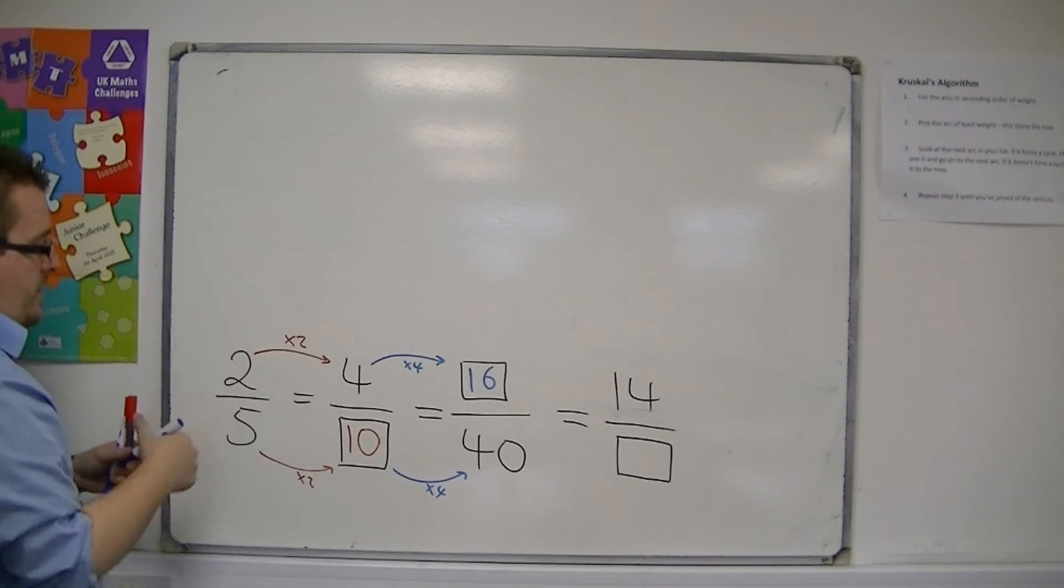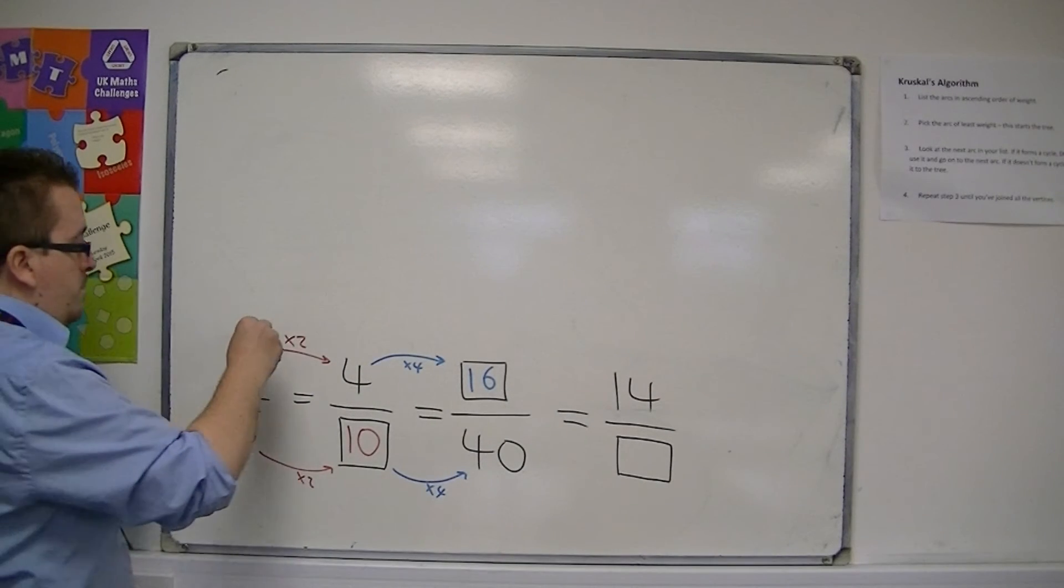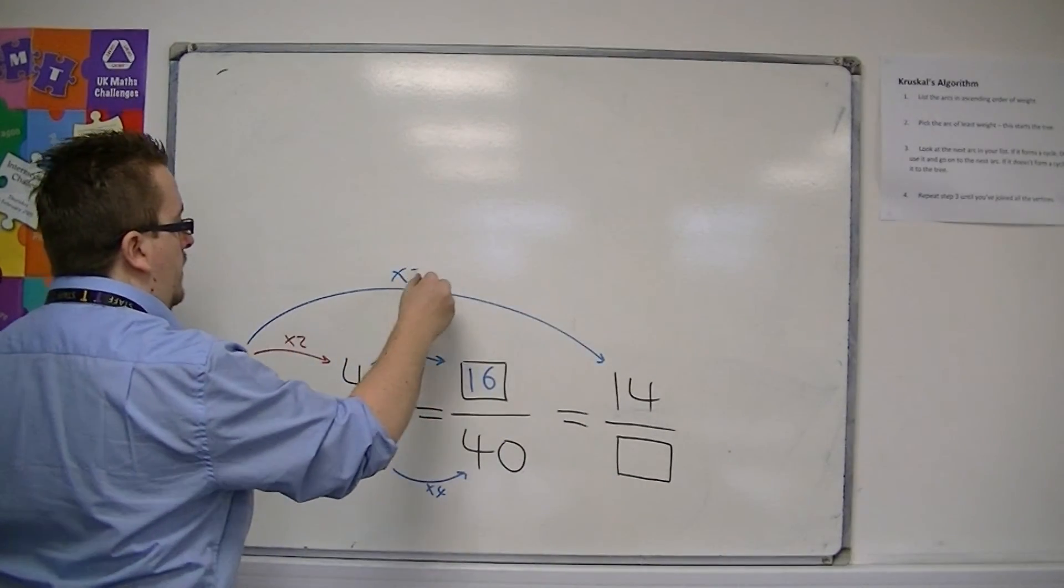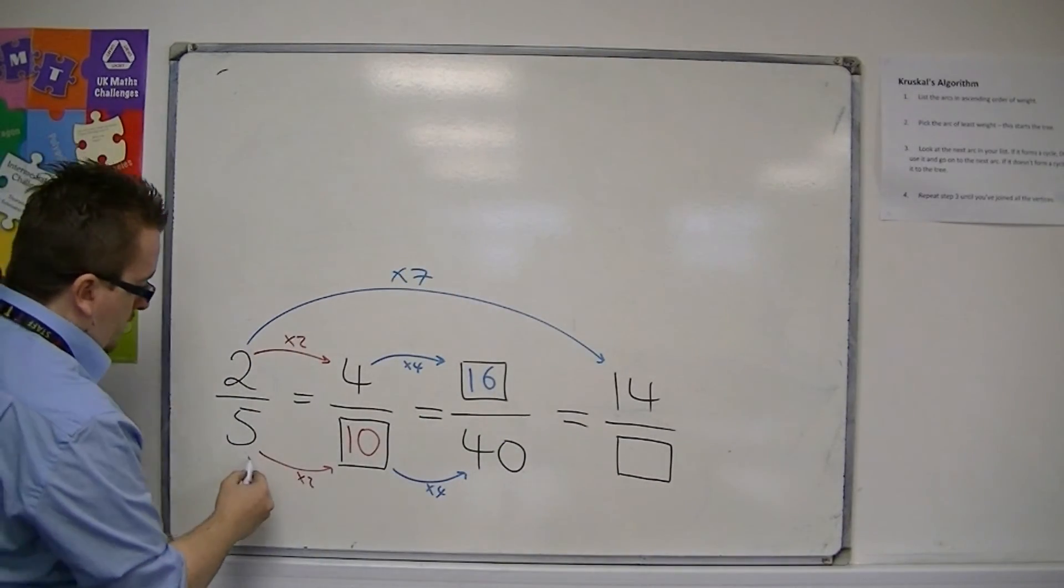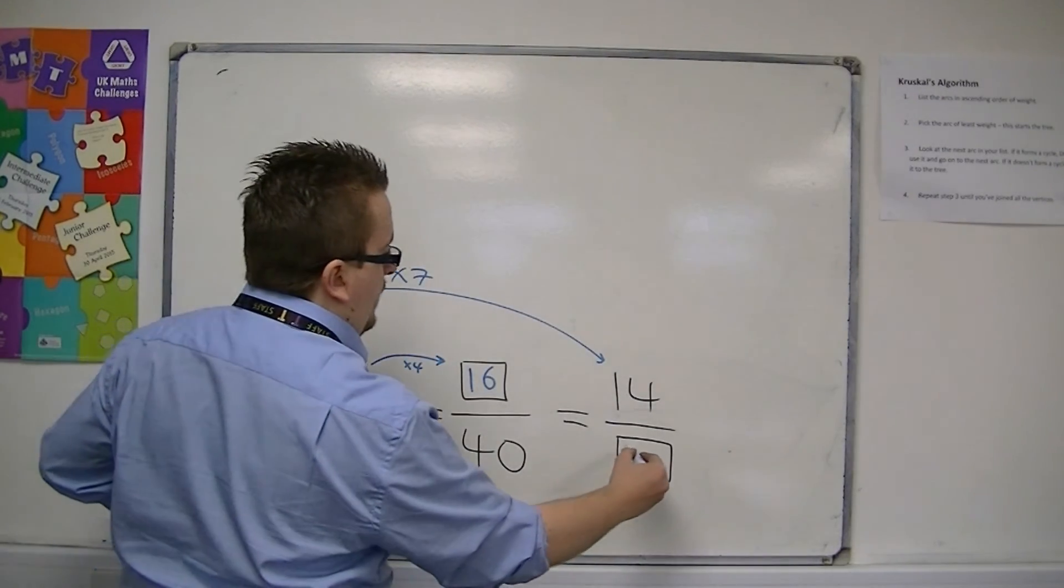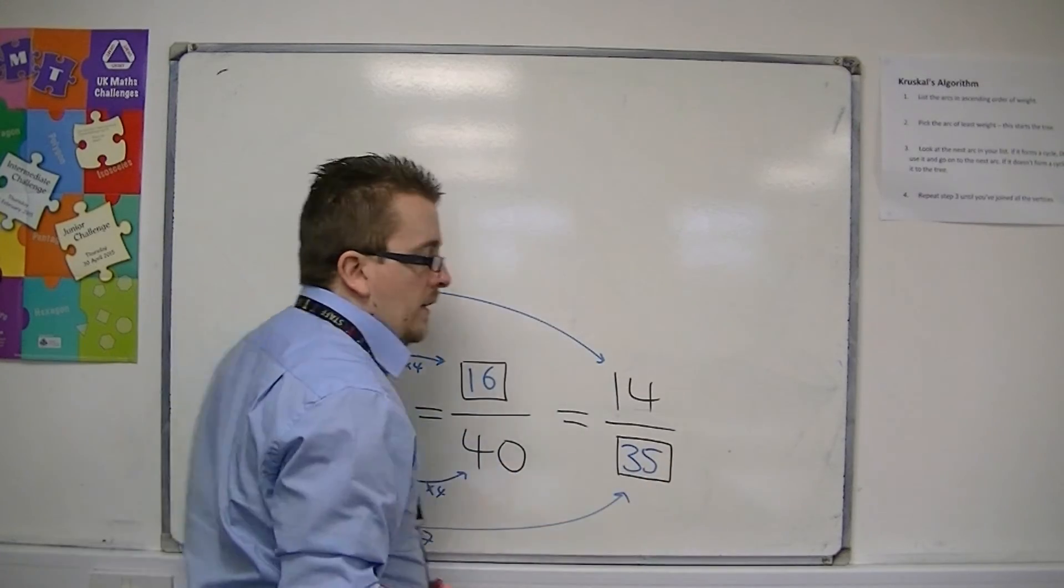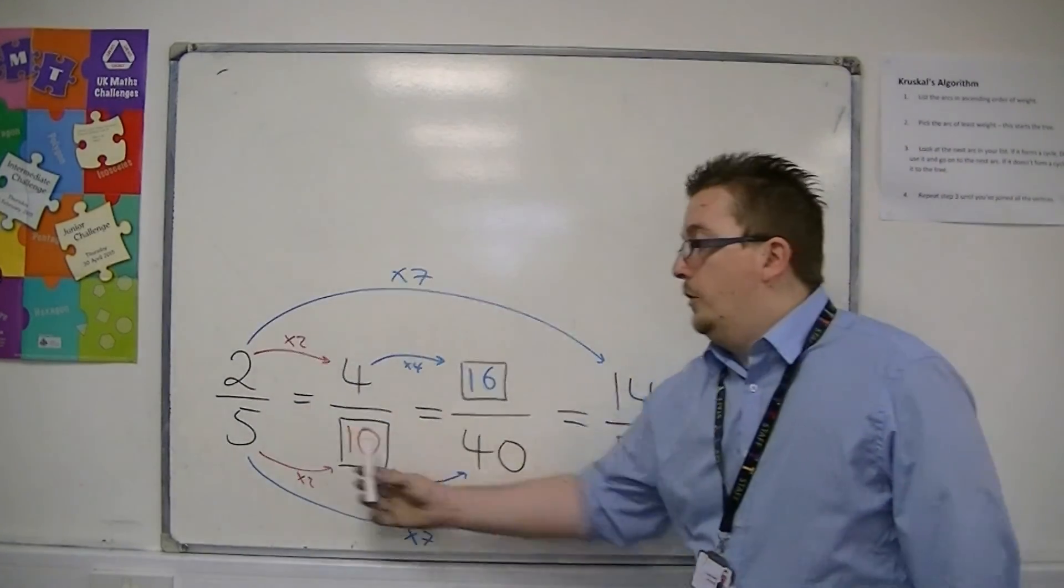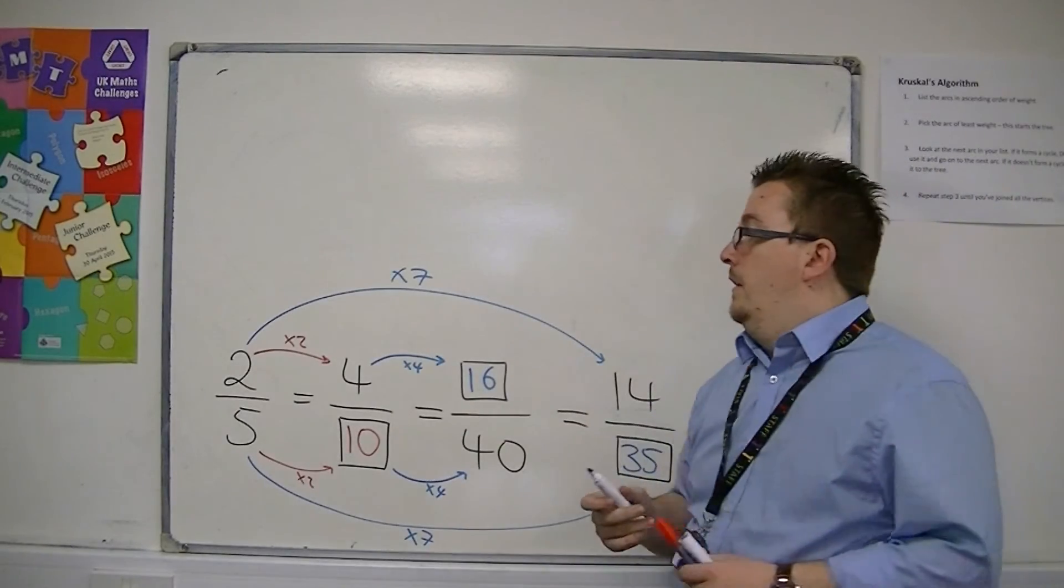When actually you can just ignore these middle two fractions and just work with the first one and the last one, like we did in the previous example. So we could multiply top by 7, 2 times 7 is 14, and multiply the bottom by 7, 5 times 7 is 35. So 14/35 is also equivalent to all of these three.